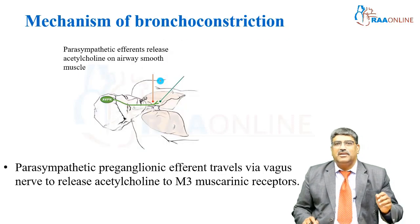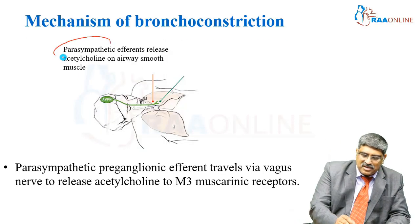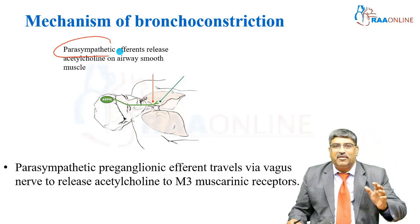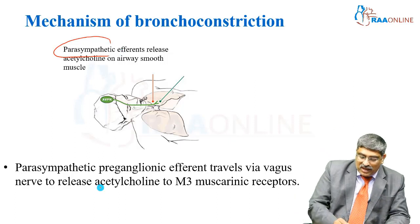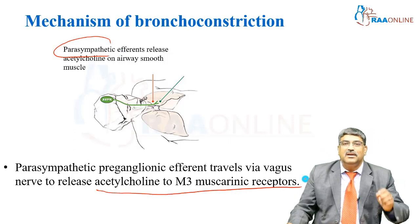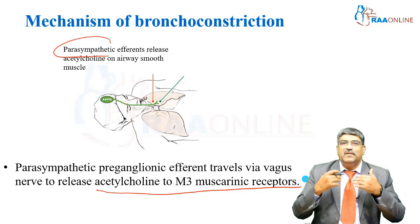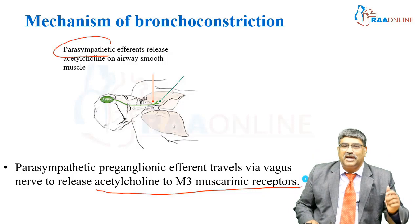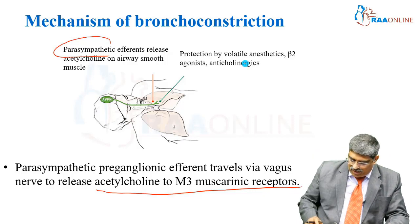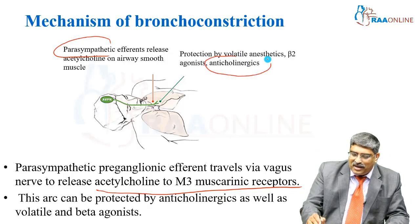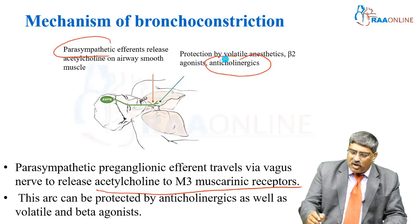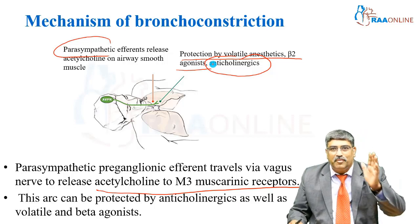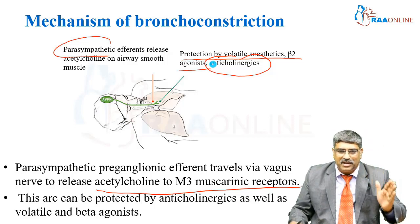Another important cause of bronchospasm is the parasympathetic pathway. The parasympathetic preganglionic fiber travels via the vagus nerve to release acetylcholine to the muscarinic receptor. You have to give something to counter this parasympathetic stimulation. Anticholinergics are given mainly to overcome this reflex. Not only that, volatile agents and beta-2 agonists also block this parasympathetic pathway.